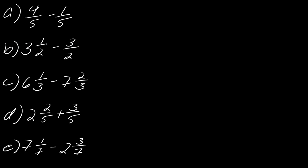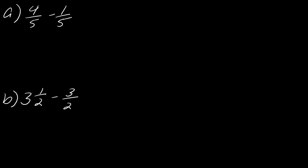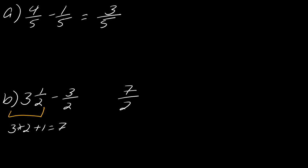For our next series, we're just going to work on adding and subtracting. Recall that we want to always convert mixed numbers into improper fractions when working with fraction operations. Starting with A: it's straightforward because we have a common denominator and no mixed numbers — four minus one gives three on top and the denominator comes along for the ride. For the next one, I convert the mixed number: three times two plus one equals seven, giving seven over two minus three over two, which equals four over two, simplifying to two.